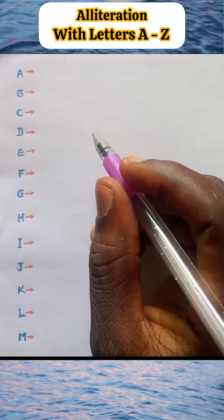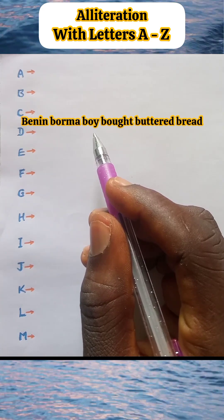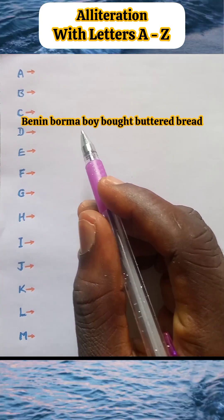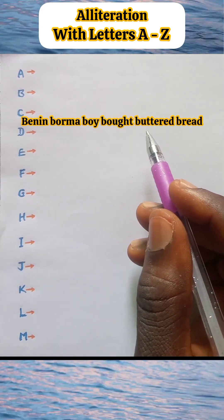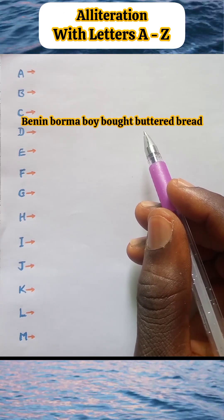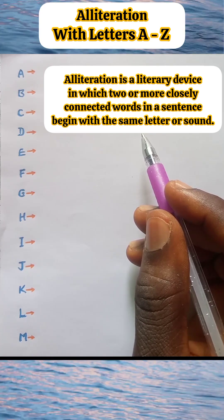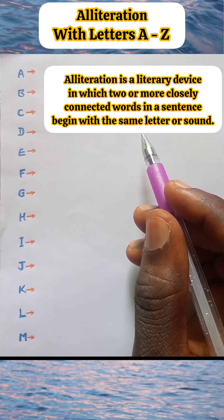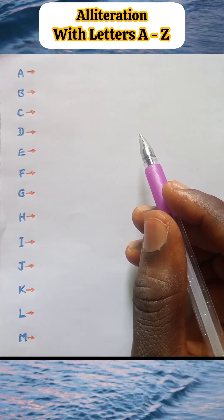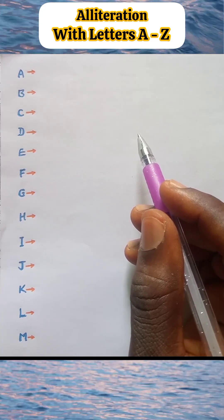Hello, have you heard of this statement: 'Benin Bomber Boy Bought Buttered Bread'? Take a look at this. All the words that make up this sentence begin with the letter B. This is called alliteration. Alliteration is a literary device in which two or more closely connected words in a sentence begin with the same letter or sound. In this video, I am going to create alliteration with all the 26 letters of the English alphabet.